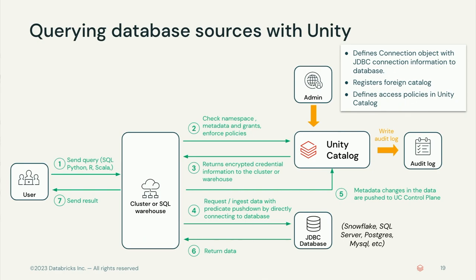For database sources, the admin defines JDBC connection information, registers it as a connection object in Unity Catalog, and registers the foreign catalog. When a user queries that data, Unity checks namespace metadata and grants, enforces policy, then provides encrypted credential information to the cluster or warehouse so it can directly fetch data from the JDBC database. Any metadata changes in the source system are automatically pushed to the UC control plane each time a query runs — a great pattern that works very well for query federation.